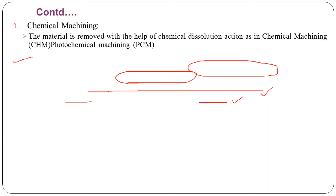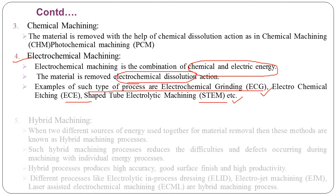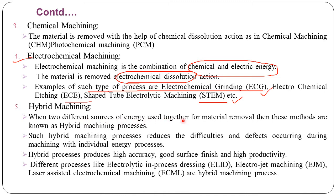The next type is chemical machining, where material is removed with the help of chemical dissolution action, as in Chemical Machining (CHM) or Photochemical Machining (PCM). Next is electrochemical machining, where the energy used is a combination of chemical and electrical energy. The material is removed by electrochemical dissolution action. Examples of this type are Electrochemical Grinding (ECG), ECE, and Shaped Tube Electrolytic Machining (STEM). In this lecture series, we are going to see STEM and ECG, which use both chemical and electrical energy.